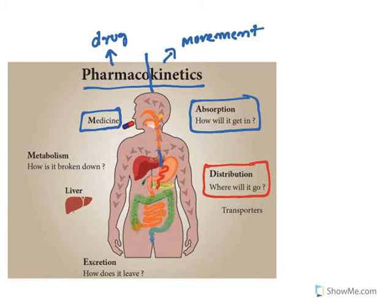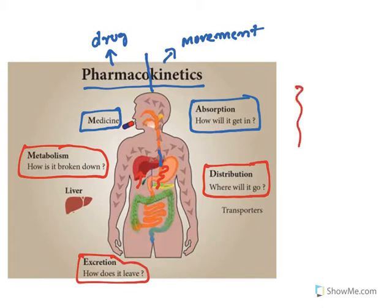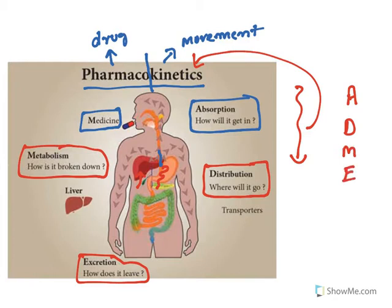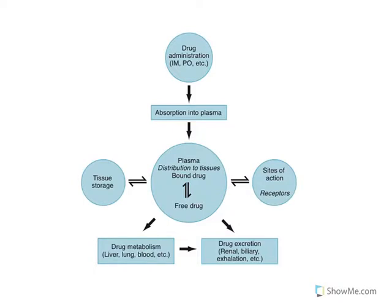After distribution, the drug finally reaches the liver — the major metabolizing organ — where it gets broken down or metabolized. After metabolism it reaches the kidneys, from where it gets excreted. The drug is moving through all compartments of the body, which is why it is called pharmacokinetics. In this topic we will read about absorption, distribution, metabolism, and excretion or elimination — known as ADME studies.